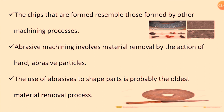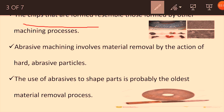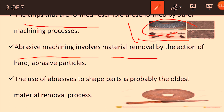The chips formed here resemble those formed by other machining processes. When you remove material, chips are formed — you can see different chip examples here. Abrasive machining involves material removal by the action of hard abrasive particles.